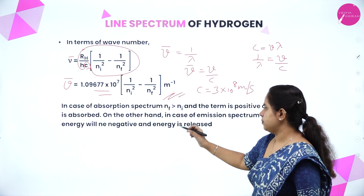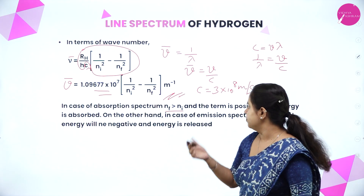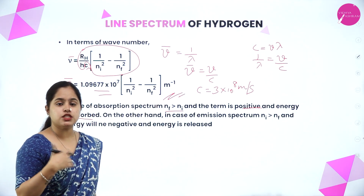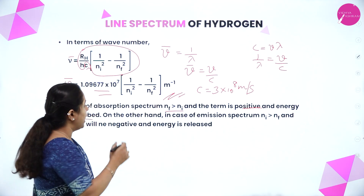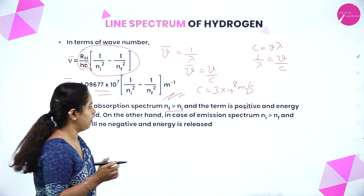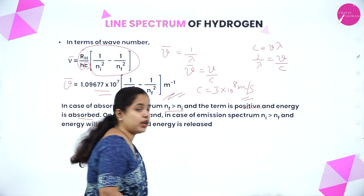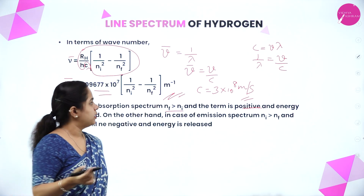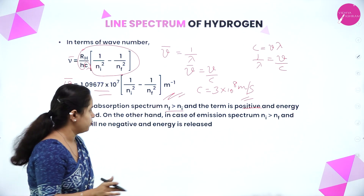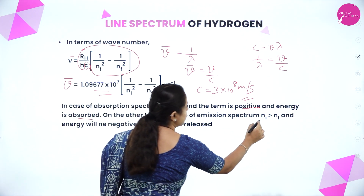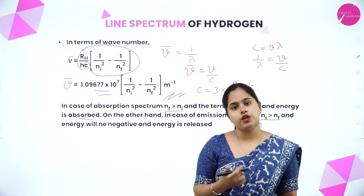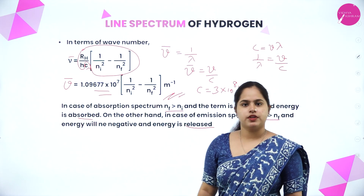In the case of absorption spectrum, Nf is greater than Ni, so the term is positive and energy is absorbed — the final answer is positive. In the case of emission spectrum, Ni is greater than Nf, so the value is negative, meaning energy is being released.